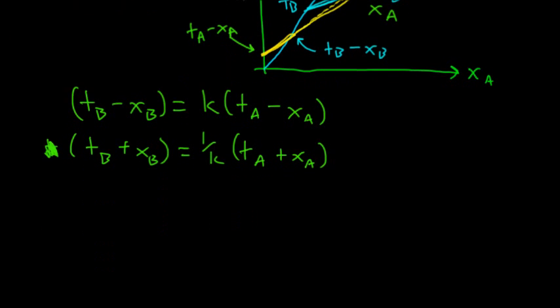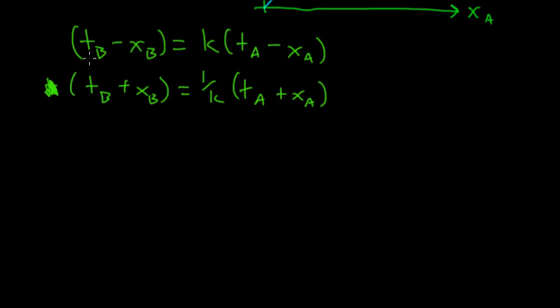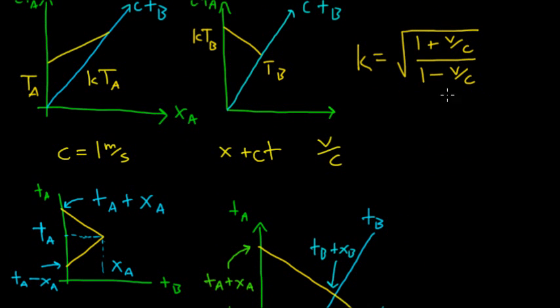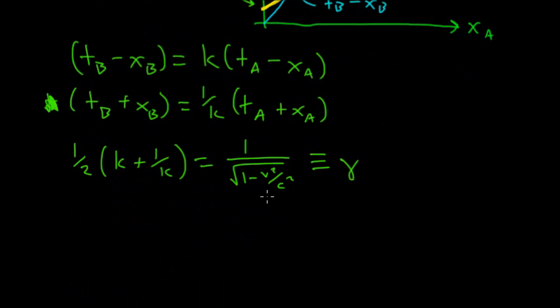We've taken this figure and we've related the time coordinates and spatial coordinates according to B to the time coordinates and spatial coordinates according to A. We can solve for TB and XB in terms of the values in A. One thing that's going to be helpful is if I take one half K plus one over K, then that's going to give me one over square root of one minus V squared over C squared. It takes a couple lines to prove this, but I recommend trying this out. We're going to call this quantity gamma.